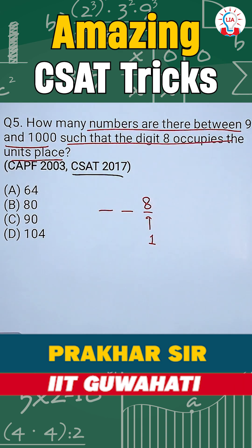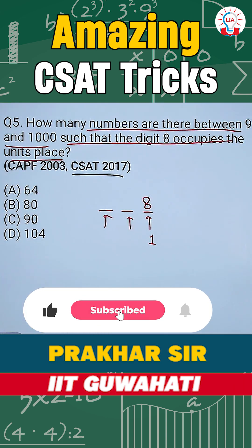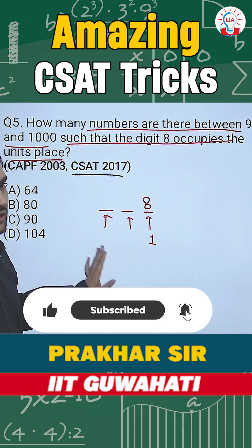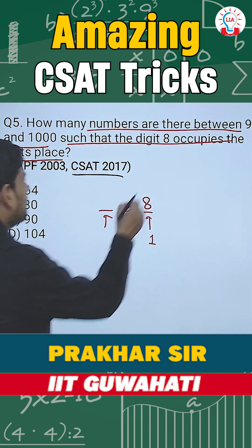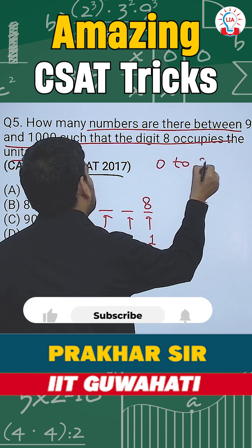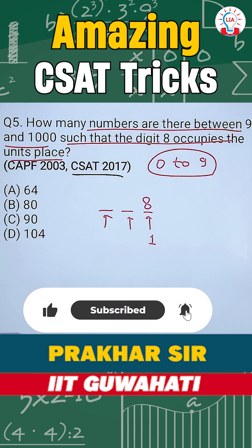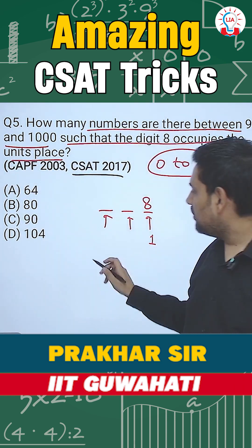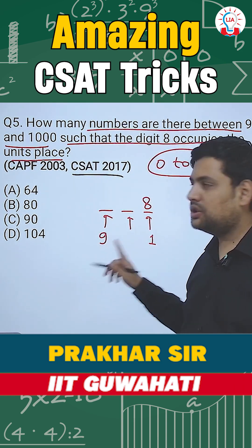Now I have to find how many numbers are there between 99 and 1000. The first digit can be any number. The numbers available are 0 to 9. But in the first place, you cannot have 0. So how many possibilities? Only 9 possibilities, that is 1 to 9.